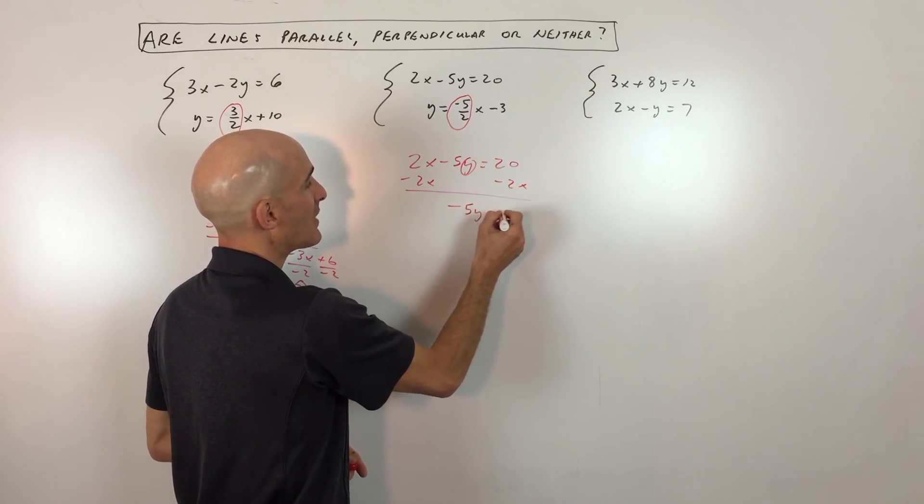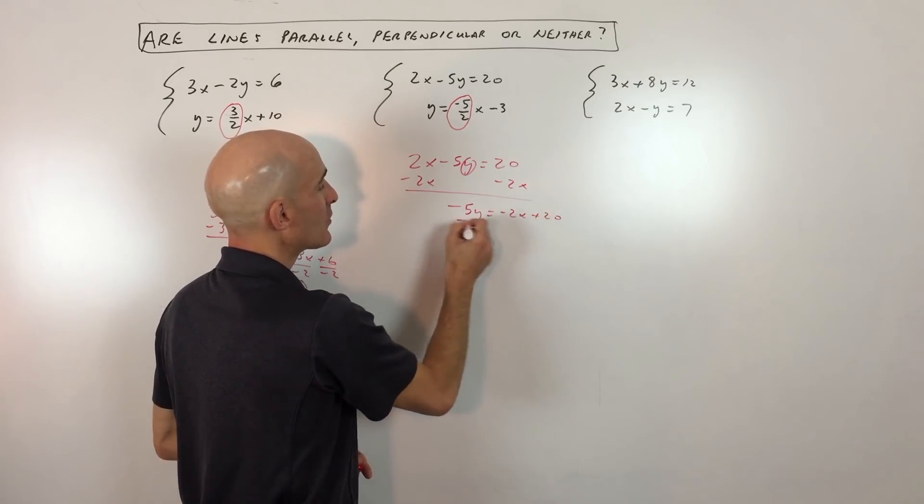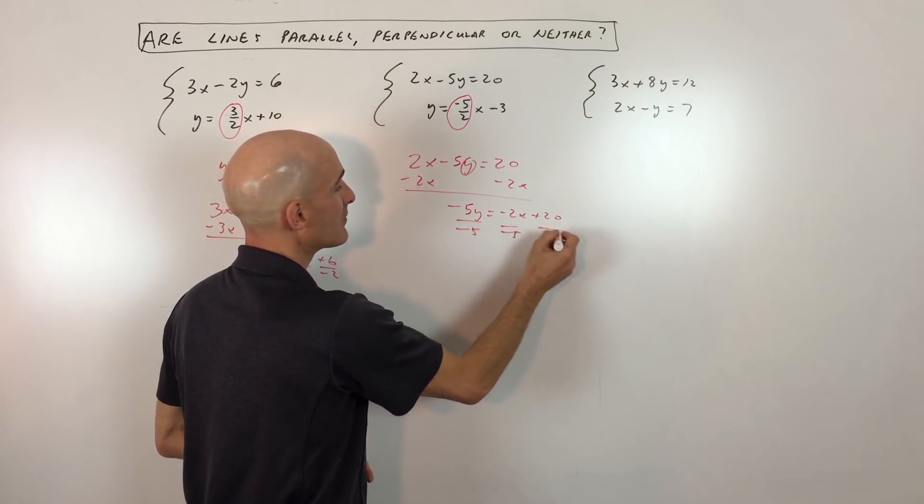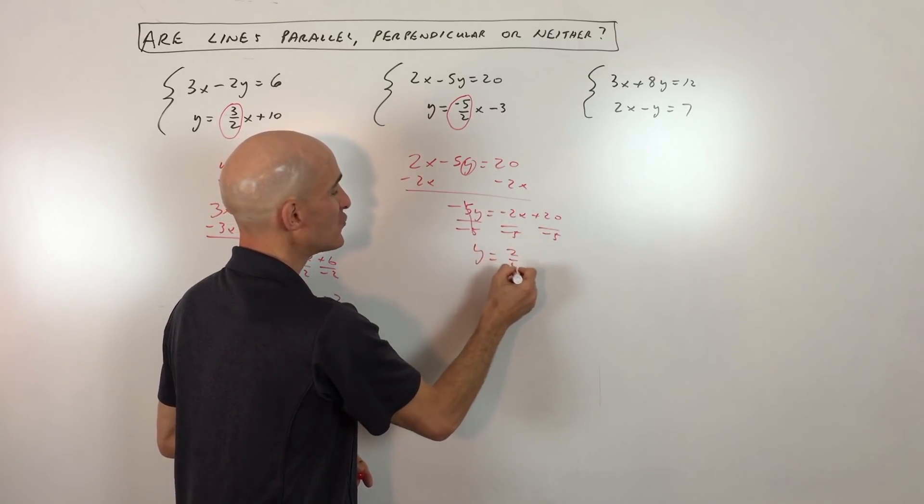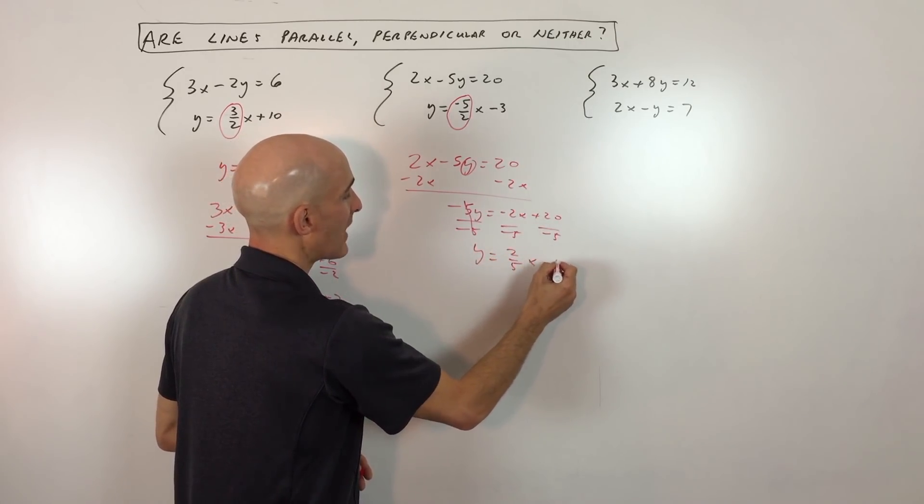That's going to give us negative 5y equals negative 2x plus 20. We're going to divide everything by negative 5 to get y by itself. So we have y equals 2 fifths x minus 4.